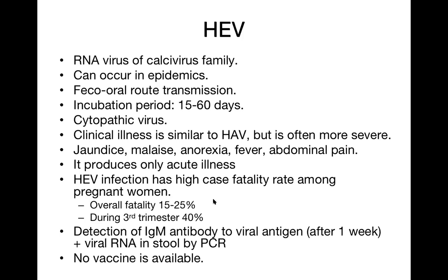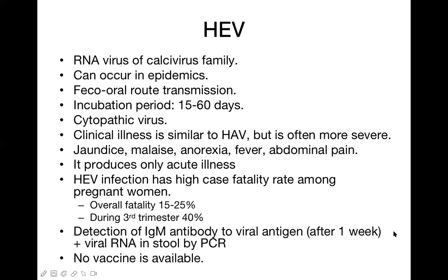If a pregnant lady develops jaundice, she should be immediately admitted to hospital for investigation to rule out hepatitis E. Though there is no specific medicine, good symptomatic and supportive therapy can be provided. Diagnosis is confirmed by detection of IgM type antibody to viral antigen after one week of infection, or by detection of RNA using PCR. There are no vaccines and no medicines available — only symptomatic and supportive therapy.